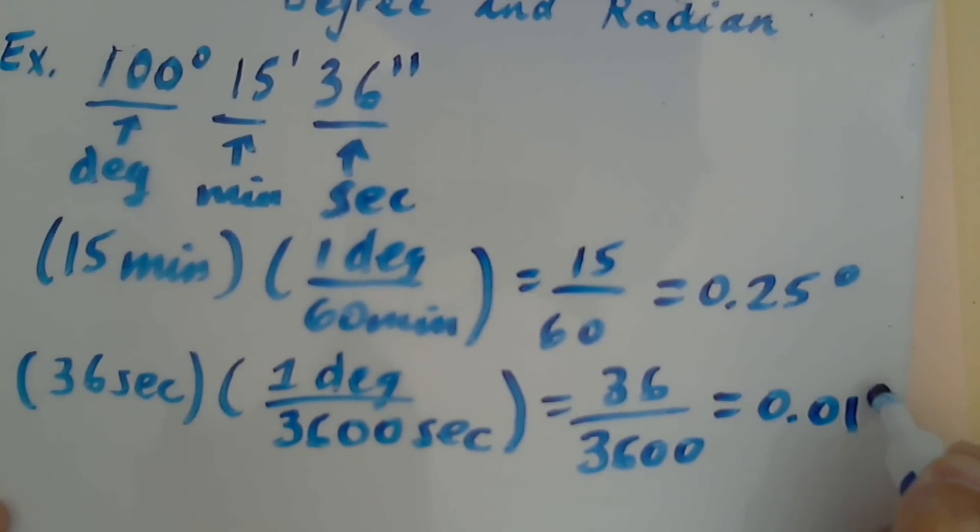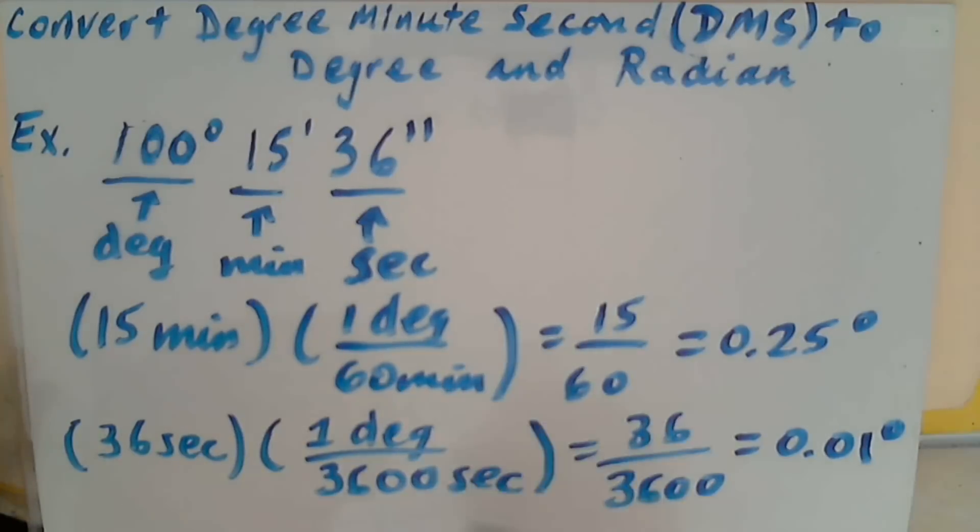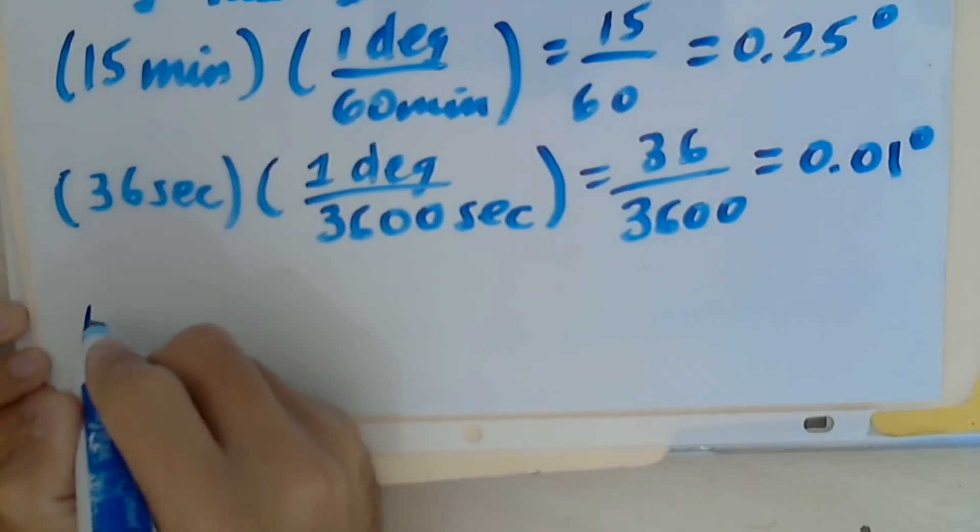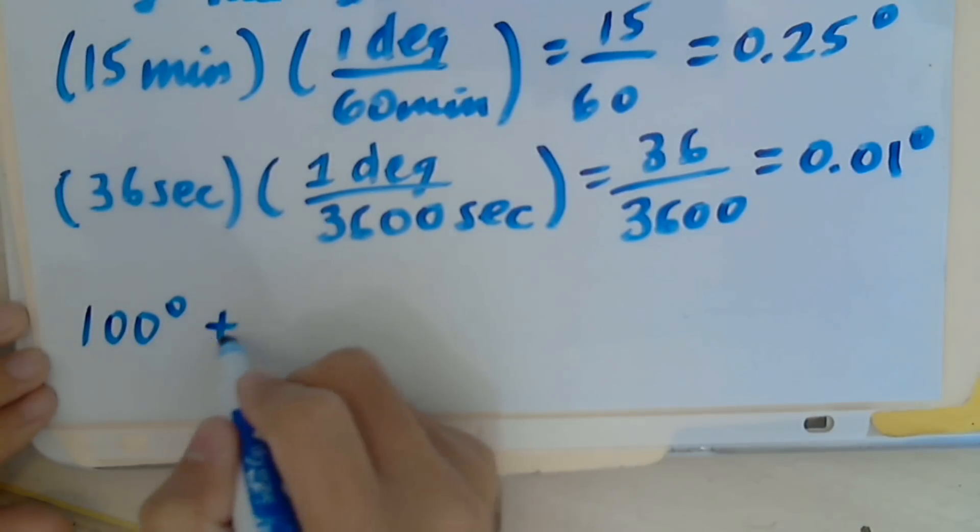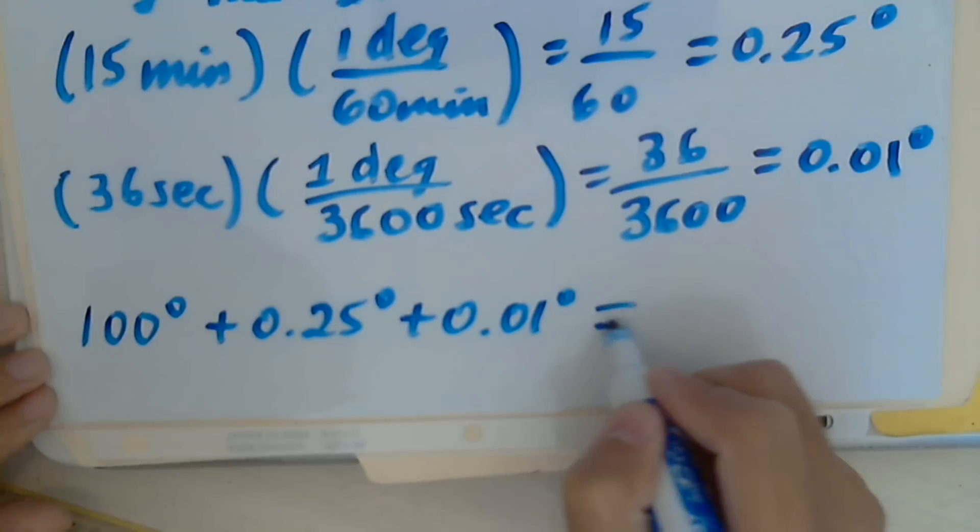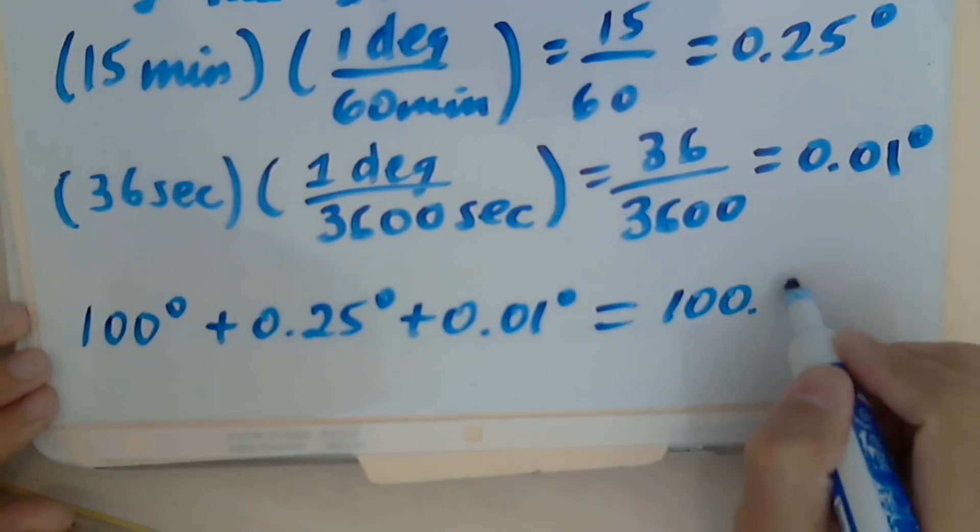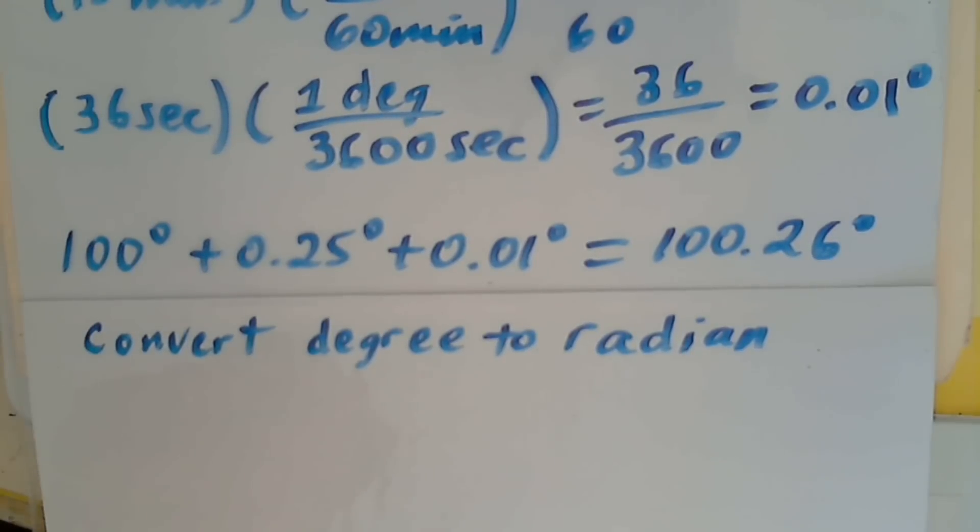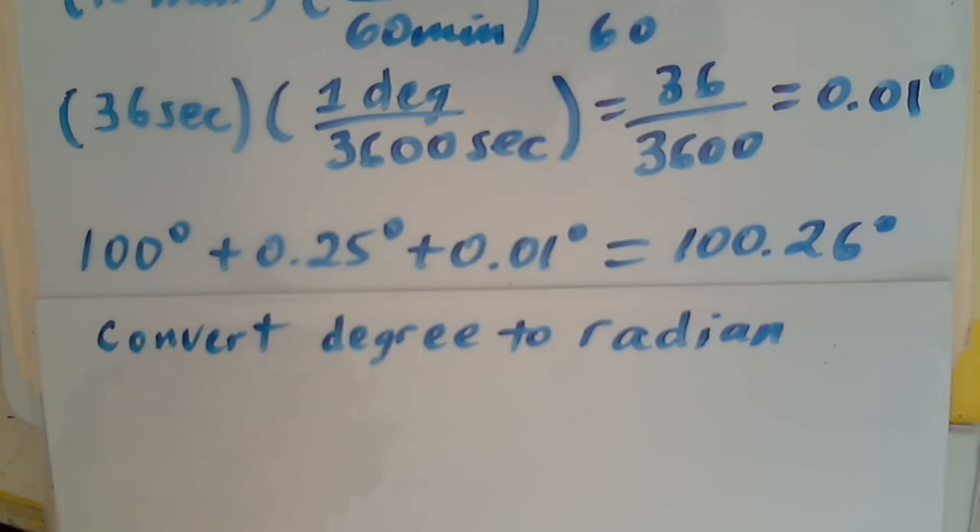I take 100 and add 0.25 and 0.01. I get 100.26 degrees. Now I will show you how to convert degrees to radians. I will use 100.26 for my example.